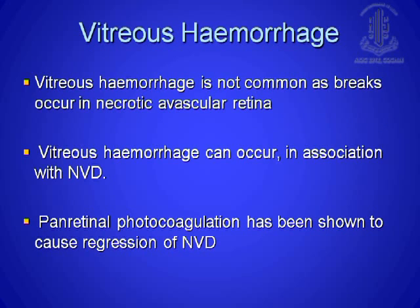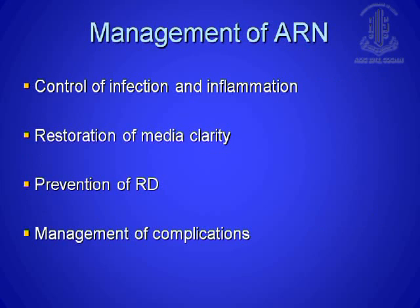If vitreous hemorrhage occurs, it is usually due to new vessel disease, which can be treated with photocoagulation. The main management of ARN involves control of infection and inflammation, restoration of media clarity, and prevention of retinal detachment and management of its complications.